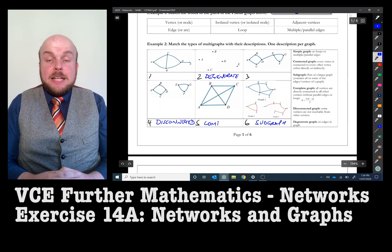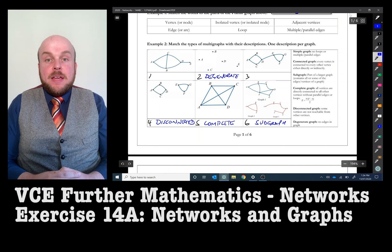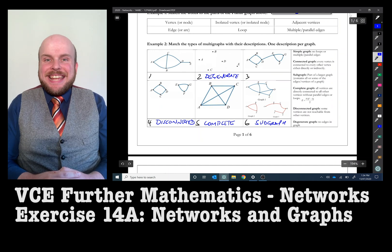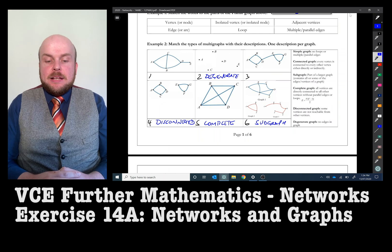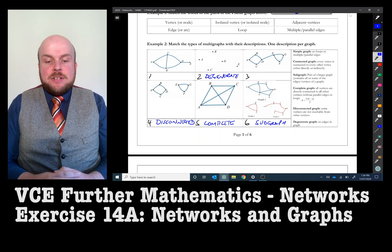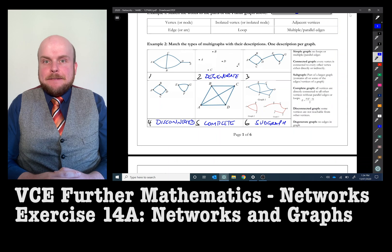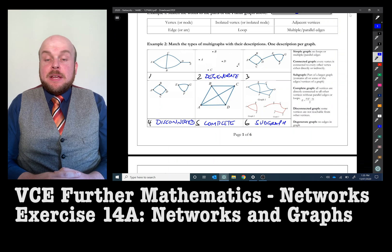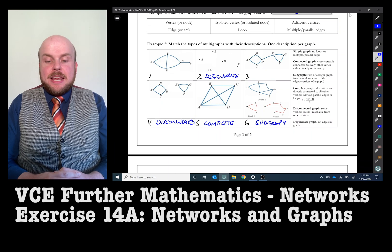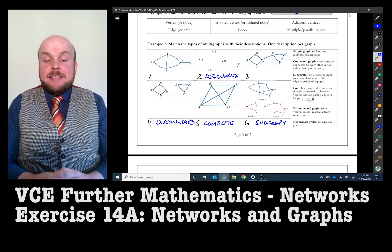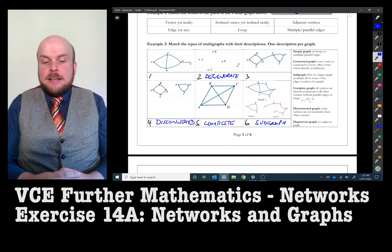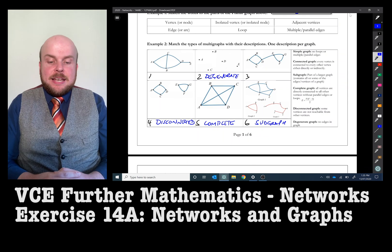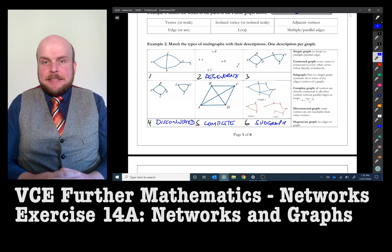A complete network or a complete graph is when every vertex is connected to every other vertex. We can see in this example here that A has an edge to B, C, and D. We can see that B has an edge connecting to A, C, and D. C has an edge connecting to A, B, and D. And D has an edge connecting to A, B, and C.